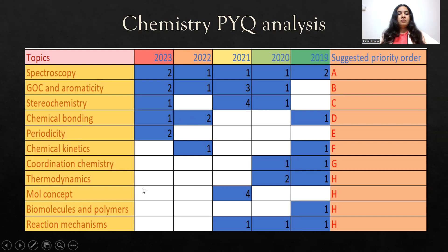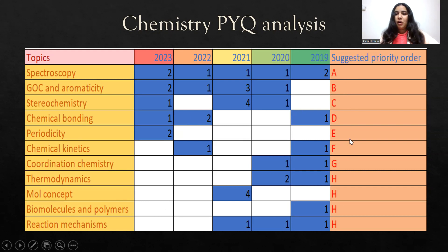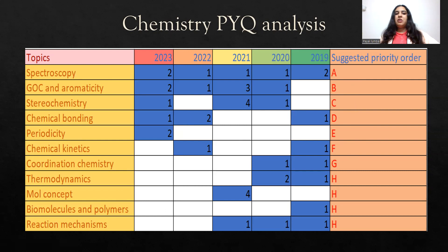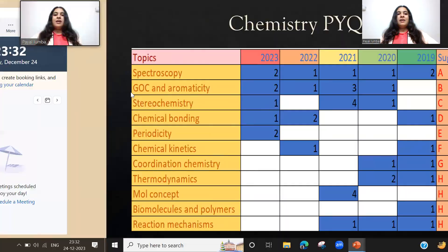The mole concept is also very important. I have provided you a priority order for the important topics of chemistry for IIT JAM Biotechnology 2024. Wishing you luck. Goodbye.